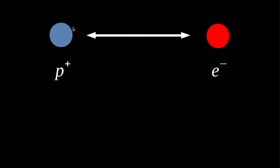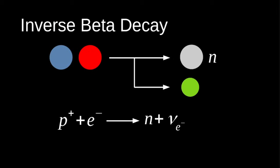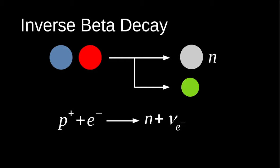Now, with protons and electrons being of opposite charge, they do not like being very close to one another. That's partly why electrons orbit around the nucleus. When these oppositely charged particles get close, interesting reactions can happen. One such reaction is called inverse beta decay — some of you may know this as electron capture. Basically, the proton and the electron react and leave us with a neutron and an electron neutrino. Through this process, you can already begin to see where more and more neutrons start to come from.